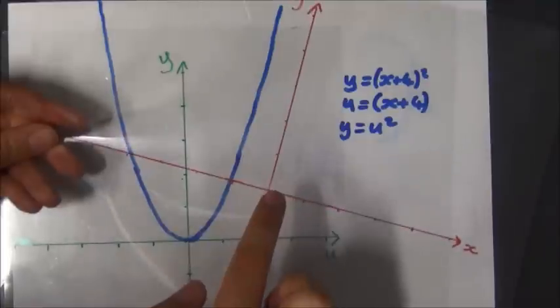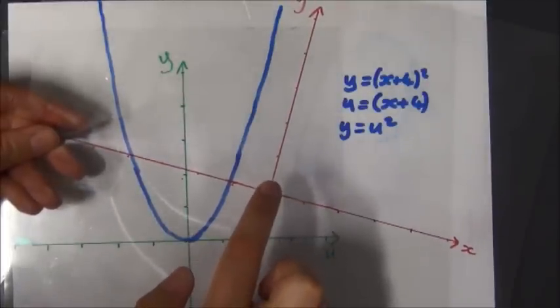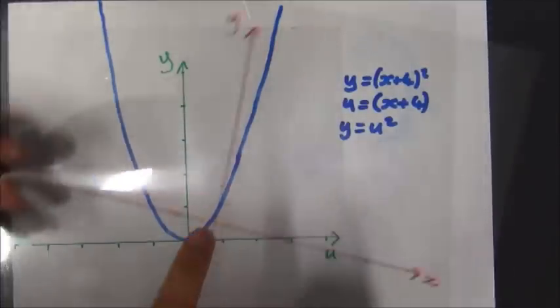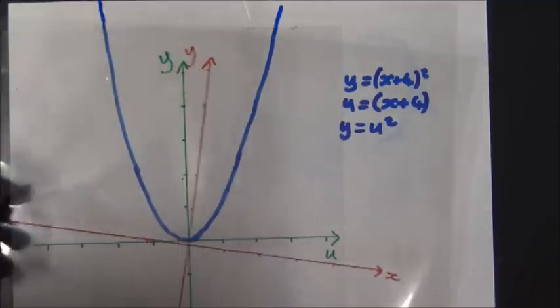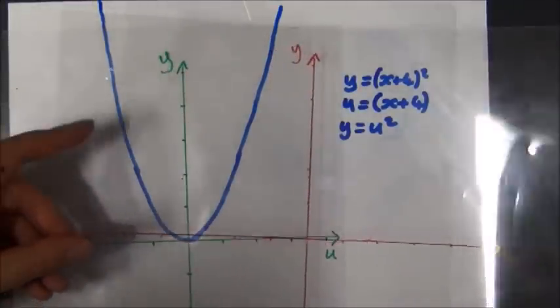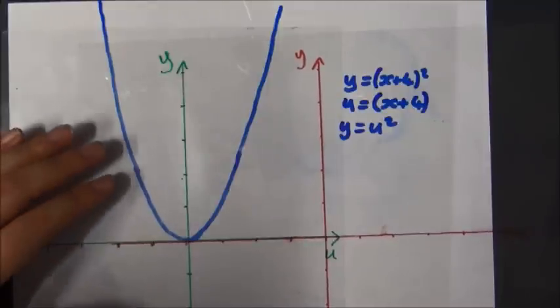So on my xy plane when x equals 0, u equals x plus 4, so u equals 4 is just there.